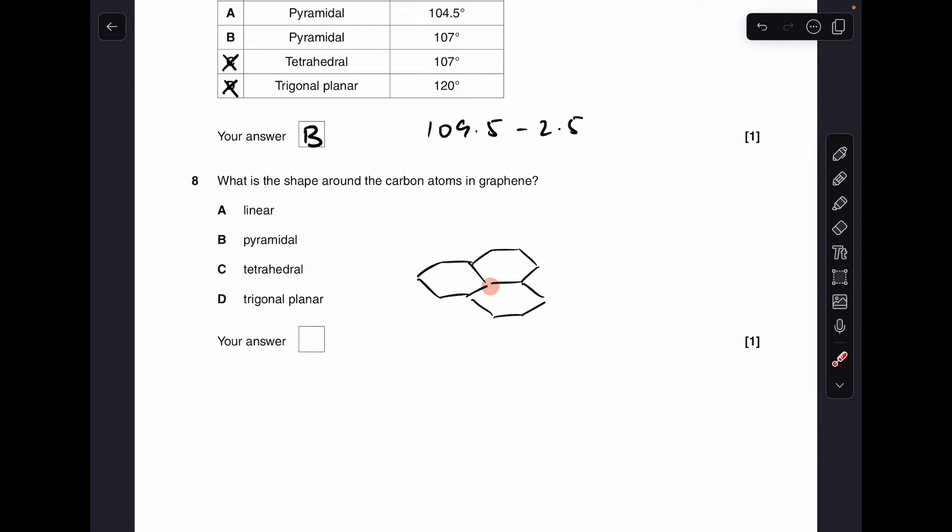Moving on to number 8. Graphene is just a single layer of graphite. So I've highlighted this carbon here. So what would be the shape around that carbon atom? You can see there are three bonds, three bonding regions. The fourth electron is delocalized around the structure. So it's a good conductor of electricity because of that graphene. But anyway, the shape is trigonal planar. So D was the answer.